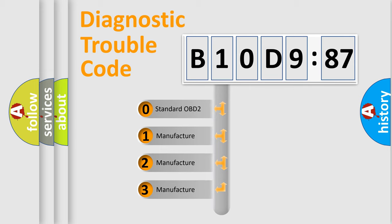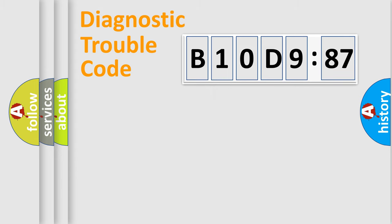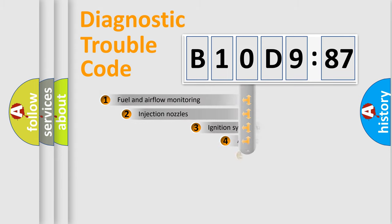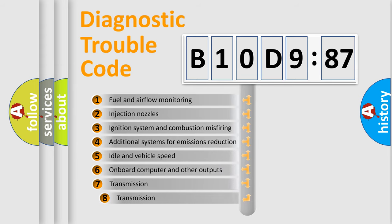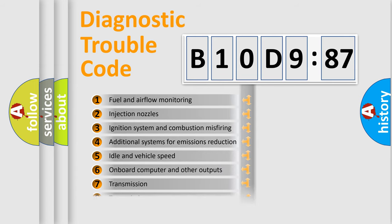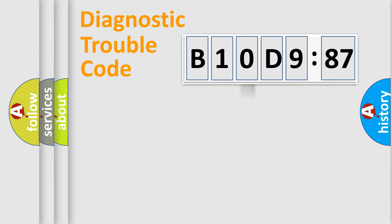If the second character is expressed as zero, it is a standardized error. In the case of numbers 1, 2, or 3, it is a manufacturer-specific expression of the car error. The third character specifies a subset of errors. The distribution shown is valid only for the standardized DTC code. Only the last two characters define the specific fault of the group.